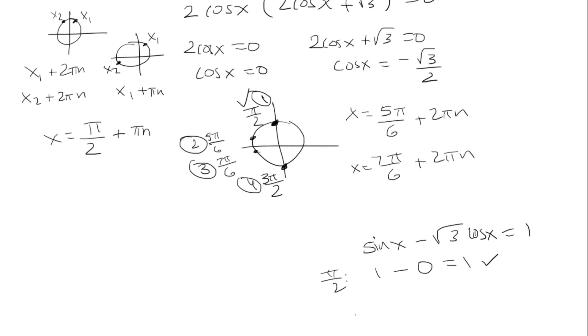Okay, let's go to 5 pi over 6 next. So sine of 5 pi over 6 is 1 half. Cosine of 5 pi over 6 is negative root 3 over 2. And does that equal 1? Let's see.